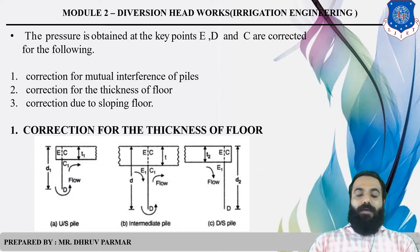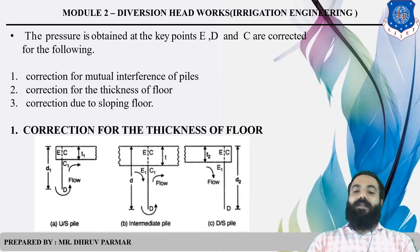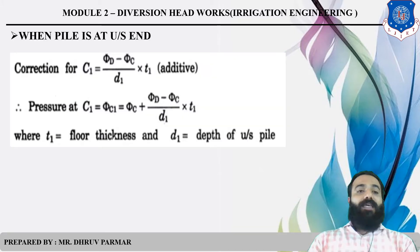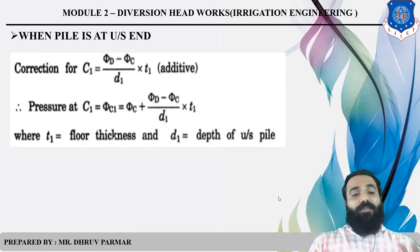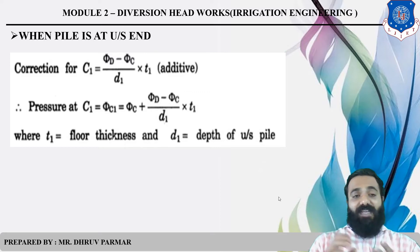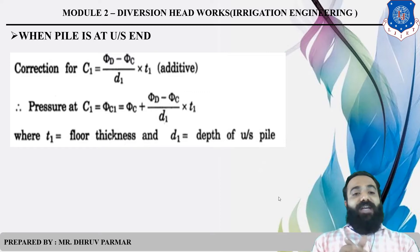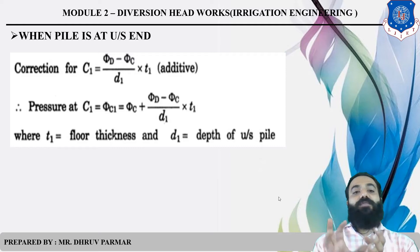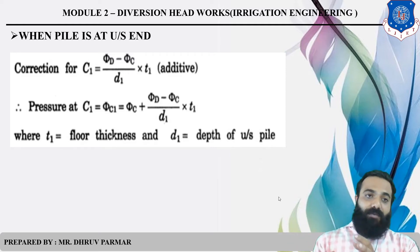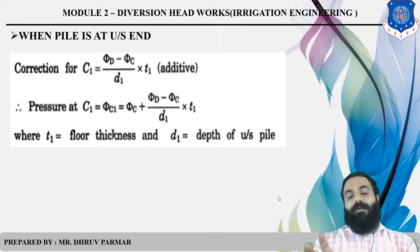For the first correction — thickness of floor — consider the upstream pile. The flow moves from D to C. The correction formula for C is: (phi_D minus phi_C) divided by D, multiplied by T, where D is the depth of pile and T is the thickness of the upstream side. The pressure at C1 is positive, meaning the correction is additive: phi_C1 equals phi_C plus that correction.